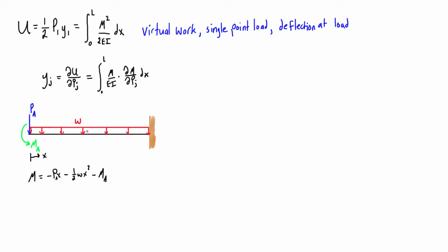So this is the expression for the internal moment. If we take the partial derivative of M with respect to P_j, we write delta M over delta P. In this case if we're looking for the deflection at point A, then we have P_a, and the partial derivative of this expression: treating everything else as a constant, the first term gives negative x, the second term goes to zero as a constant, and the third term goes to zero as a constant.